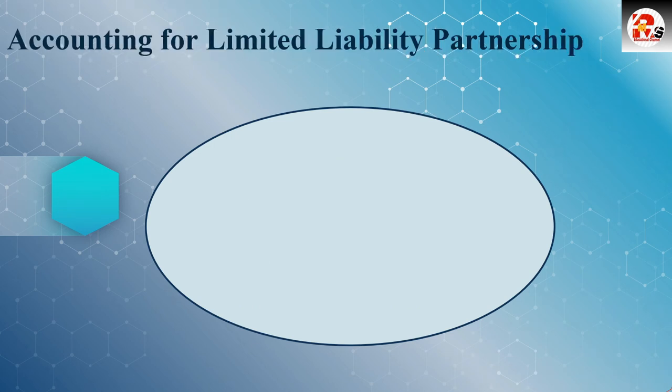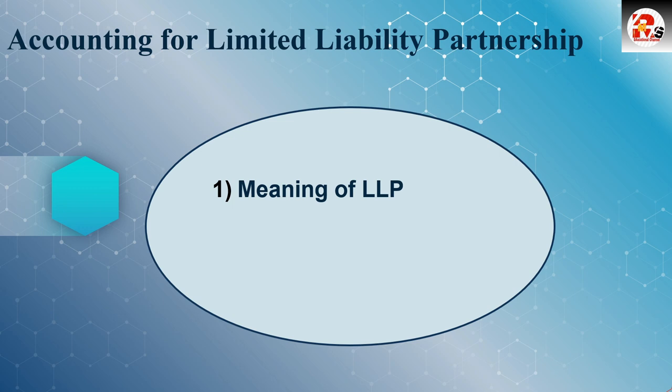The next topic is accounting for limited liability partnership. This topic is a little bit related with amalgamation, because in amalgamation you are calculating the purchase consideration, and similar types of calculations are related with this topic. A similar type of topic you have already studied is conversion of partnership into a limited company. We will be learning the meaning of LLP, what LLP is, provisions and statutory provisions related to the LLP.